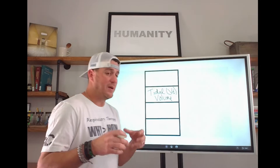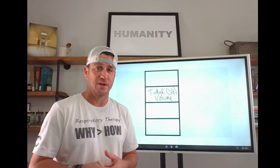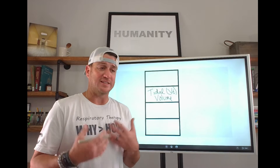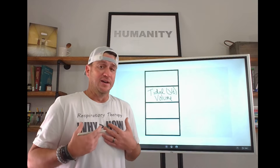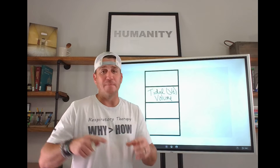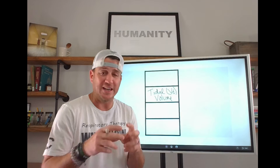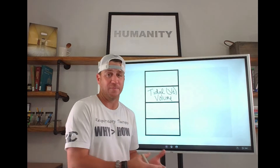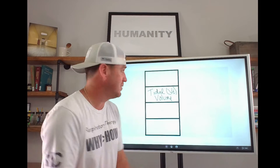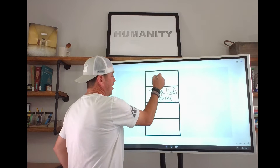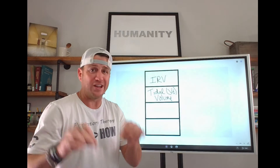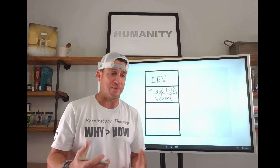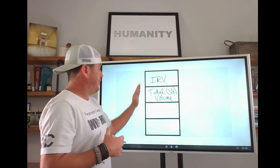On top of those normal volumes, we can take in more volume. If I breathe in — that's a tidal volume — and then I breathe in as deep as I can, that is my inspiratory reserve volume. It means it's an amount of inspiratory volume that can be taken on top of a tidal volume; it's extra volume that we have to utilize. This is IRV, short for inspiratory reserve volume.